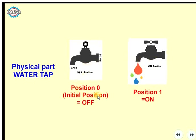In the initial position, there is an off condition. If we move to position 1, it is the on position. At this position, we have port 4 and position 1.